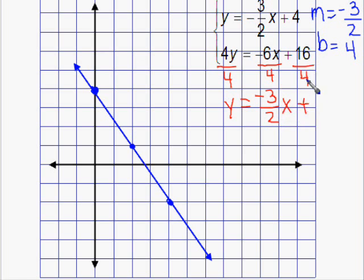So to graph this line, we recognize that the slope is negative 3 halves and the y-intercept is 4. So we'll place the y-intercept on the y-axis and we'll go down 3 and right 2 to find other points on our line.